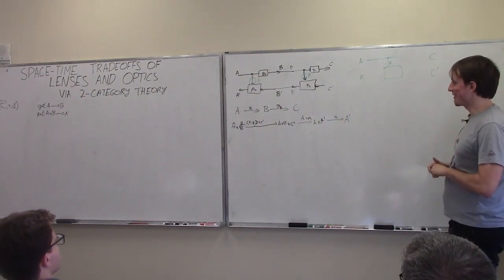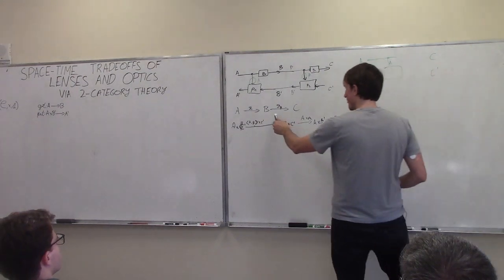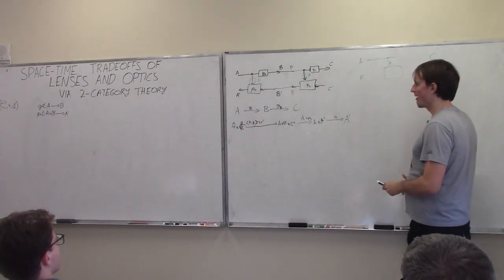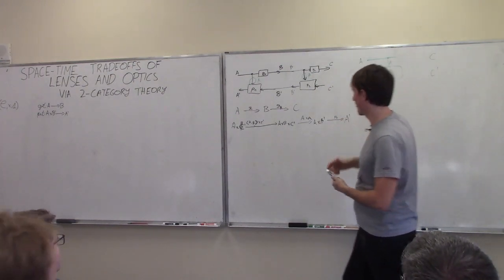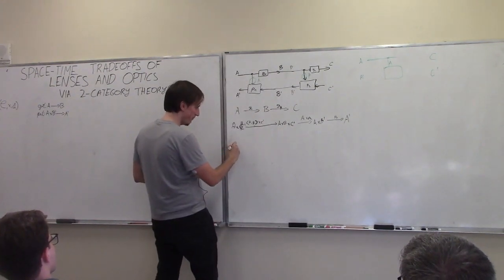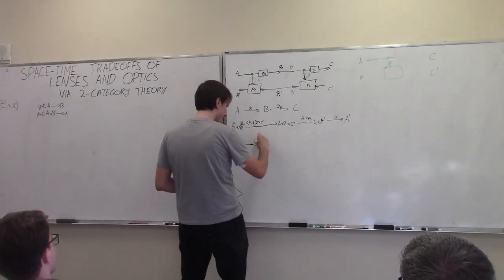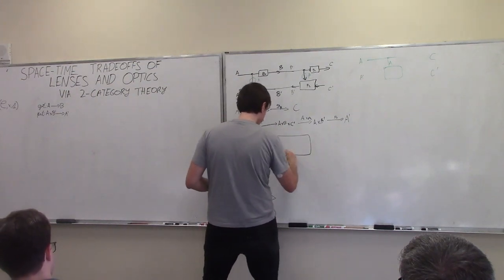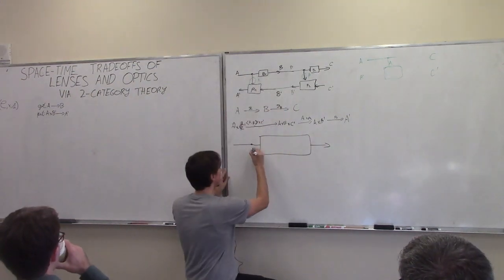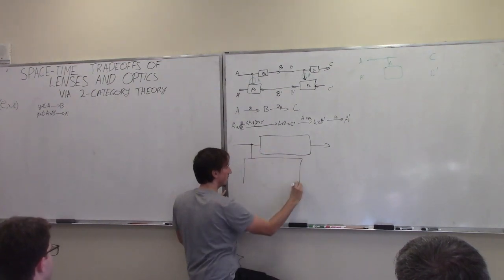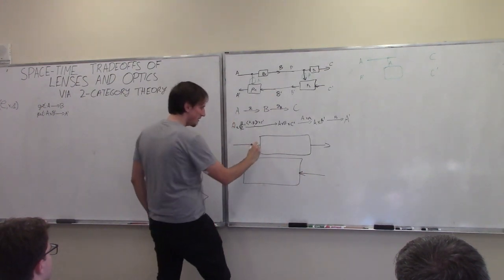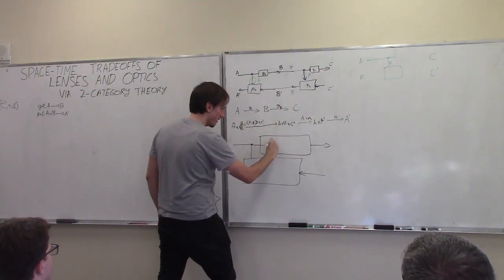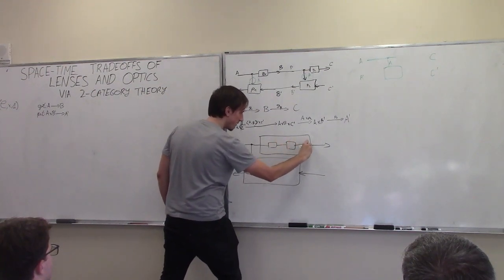Why am I talking about all of this? Because we noticed that the way these lenses are composed is different than what you'd naively expect. This is how the composition really looks. The forward part just composes the get maps as expected — get-one, get-two — and then we have the backward maps involving put-one and put-two.